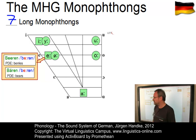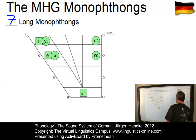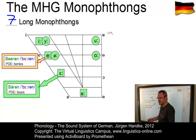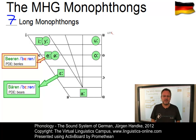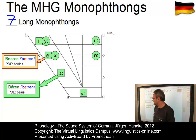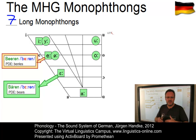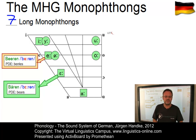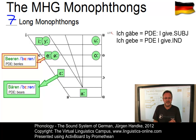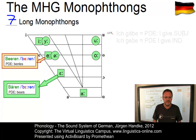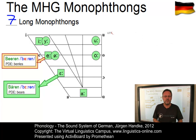Others generally keep them apart, thus they have one vowel more — they would say Beeren (the berries) and Bären (the bears). But even those who keep them generally apart, for example in some verb forms in order to distinguish the subjunctive or indicative, as in verbs like ich gebe versus ich gäbe, even they still only have one vowel e in some contexts.